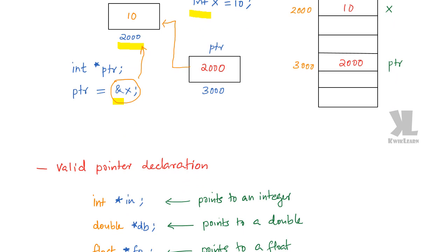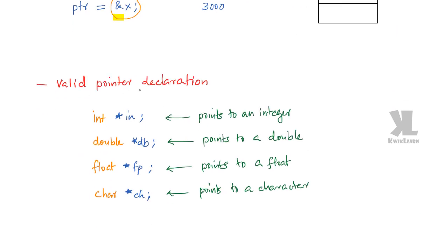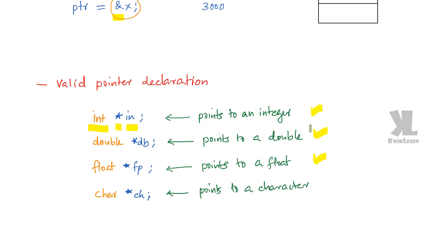These are some of the valid pointer declarations. We declare int star — int represents the data type, star represents the pointer, and the name represents the variable name — and this points to an integer. If you want to point to a double value, you declare double star db.